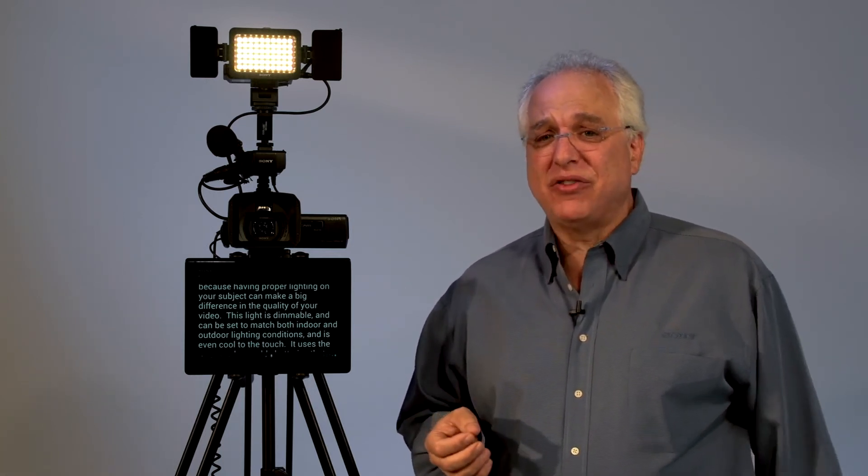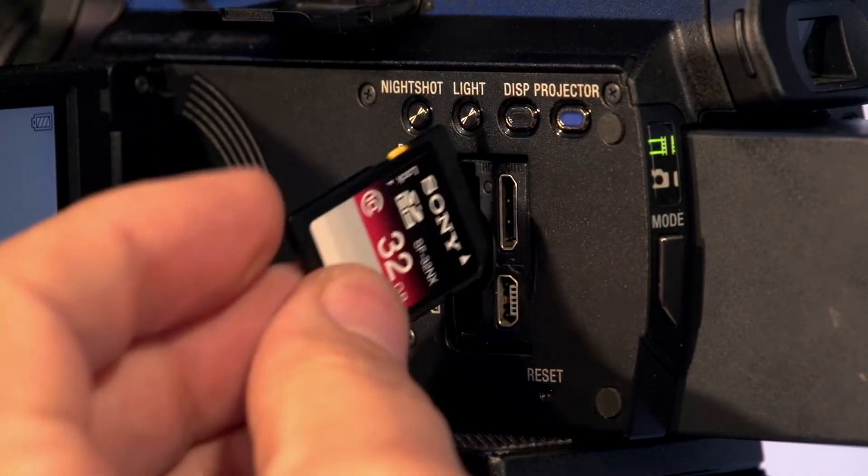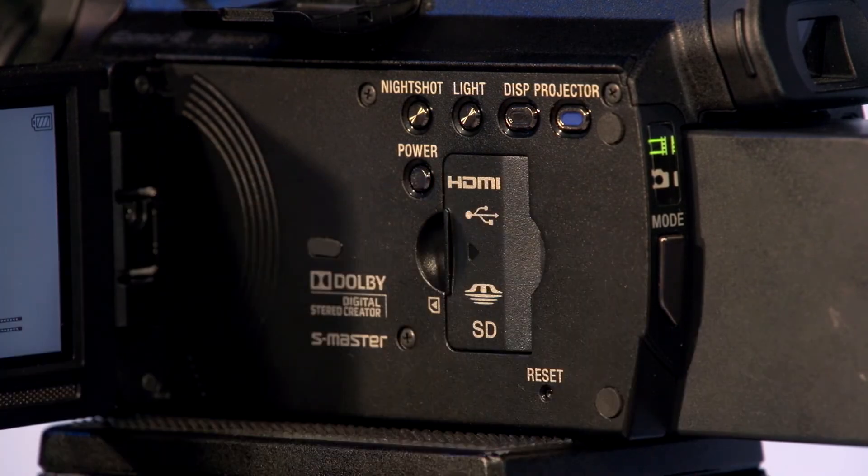The NX30 records to 96GB of internal solid-state memory, allowing for capturing of about 9 hours of video, even while set to record at the camera's highest quality, certainly long enough to capture most any presentation or performance. In addition to the built-in memory,